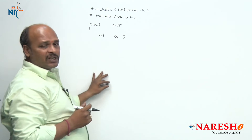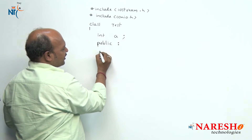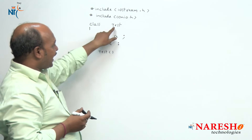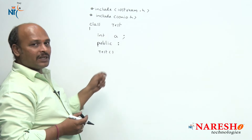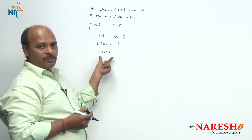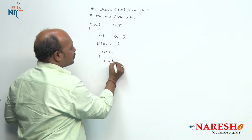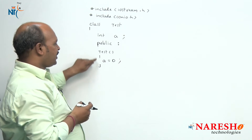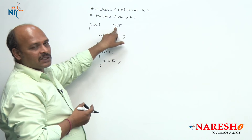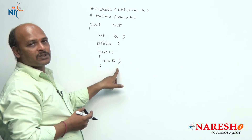The a value is not yet initialized, so I want to initialize it. I am going to use the constructor concept. When the class name and function name are both the same, it is called a constructor. Here there is no argument, so it is called a default constructor. In the default constructor, I am going to initialize the a value with 0. When this class object is created, automatically a value becomes 0.